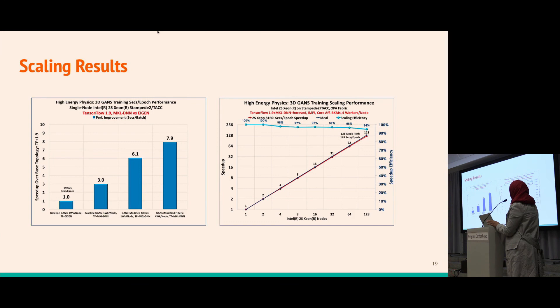These are some scaling results. The first plot on the right shows the speedup from Intel optimized MKLDNN. The first plot is the baseline without optimization, then we get an order of 3 speedup by using Intel MKLDNN.